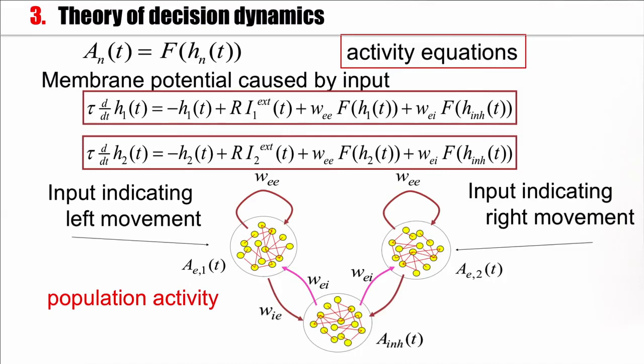Here is the basic model. I have one population of excitatory neurons that would indicate left movement or a saccade performed to the left, and another population that would indicate a saccade to the right or movement to the right. Each of these neuronal populations has interactions with itself, so neurons communicate with each other inside a population.